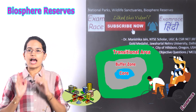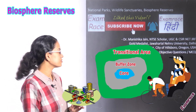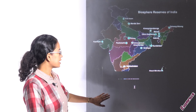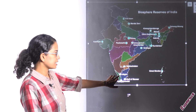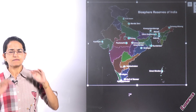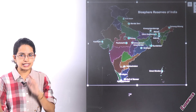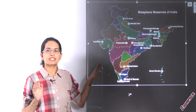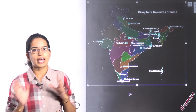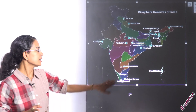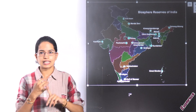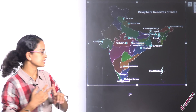In India, so far we have 18 biosphere reserves declared. The first biosphere reserve declared was the Nilgiris, in 1986. These biosphere reserves are part of UNESCO's MAB program — the Man and Biosphere program. The Nilgiris lies across three states: Kerala, Tamil Nadu, and Karnataka.